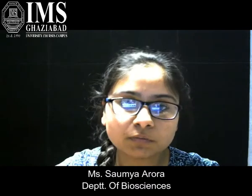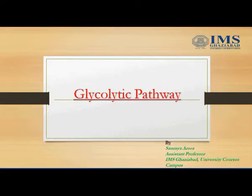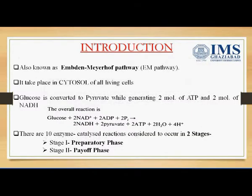Today we are going to discuss the first step of cellular respiration, that is the glycolytic pathway. Glycolytic pathway is also known as the Embden-Meyerhof pathway. It takes place in the cytosol of all living cells. In this pathway, glucose is converted into pyruvate, generating two molecules of ATP and two molecules of NADH. This complex comprises 10 different enzymes, which we have divided into two phases: the Preparative phase and the Payoff phase.